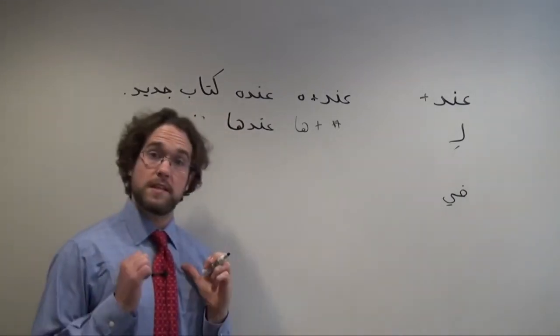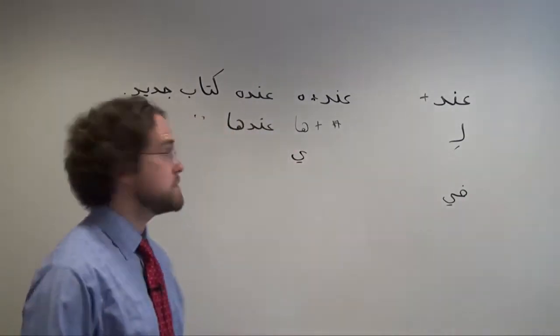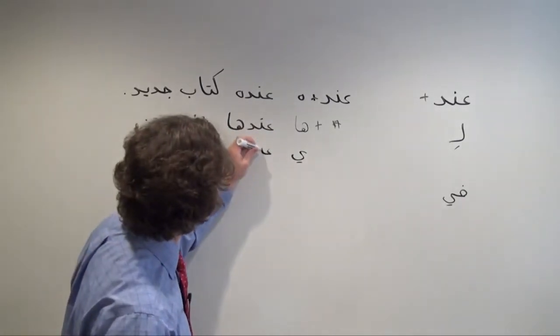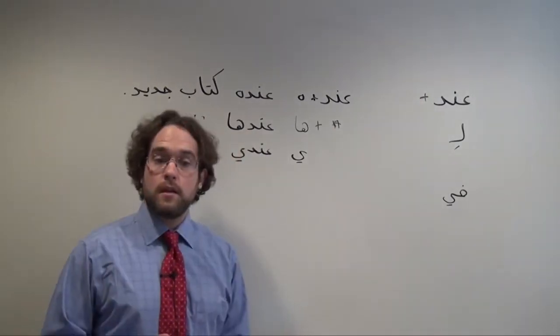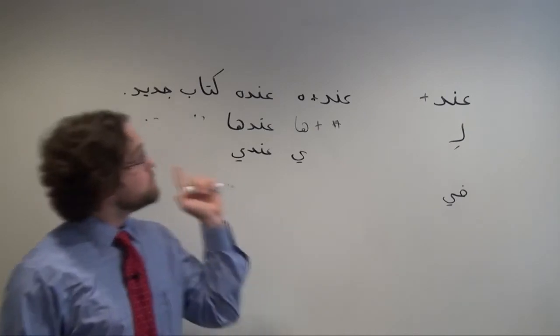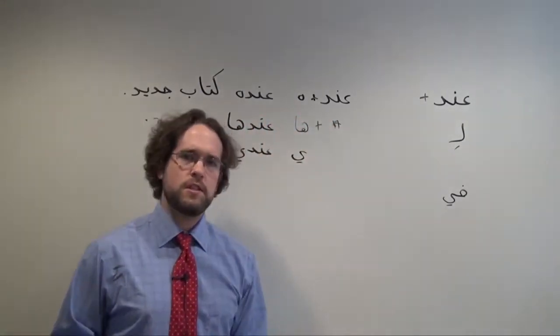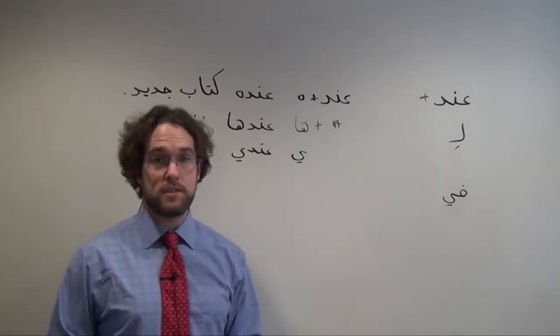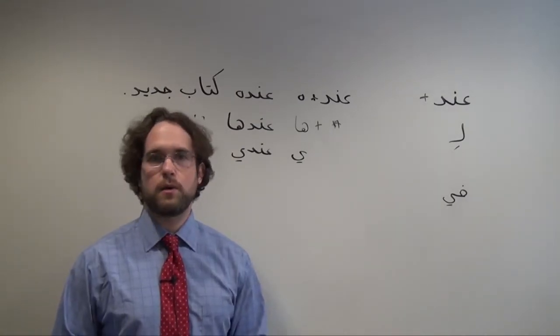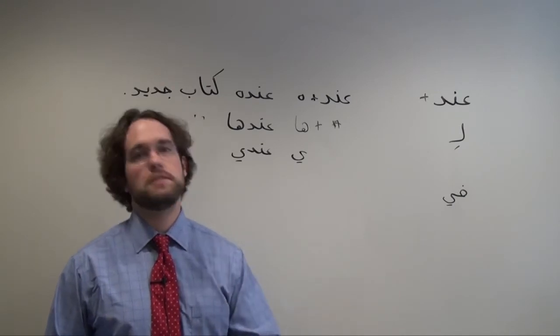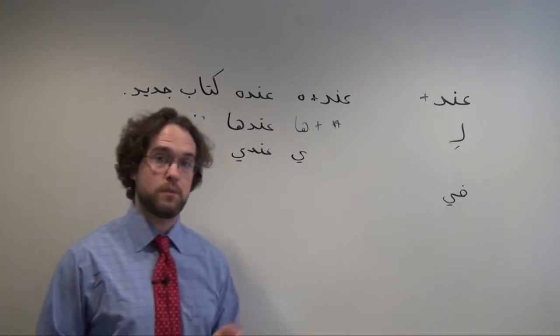If I wanted to talk about myself, I have a new book, instead I would use يَا, the أنا possessive suffix, and I would wind up with عندي. Another particle—oh, before we continue, it's important to remember that عند, to express possession in this way, we can only use it for human possessors, right? People possessing things. I wouldn't talk about a city, or a building, or a dog. We have different ways to express that, which we're going to get to.